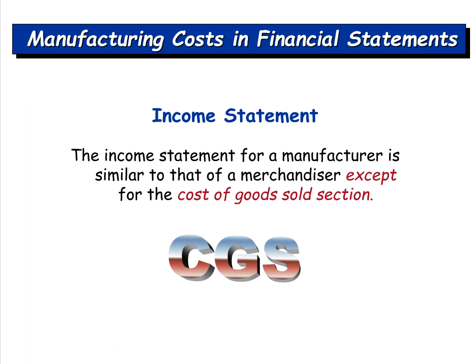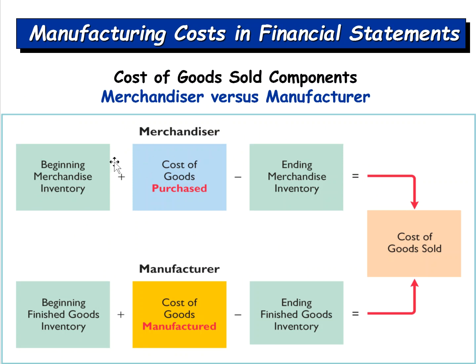The income statement for a manufacturer is similar to that of a merchandiser, with one subtle difference. A merchandiser starts with beginning merchandise inventory, adds purchases made during the period, and subtracts ending inventory to get cost of goods sold. A manufacturer starts with beginning finished goods inventory — since manufacturers carry three types of inventory: raw materials, work in process, and finished goods — then adds cost of goods manufactured during the period and subtracts ending finished goods inventory to calculate cost of goods sold.